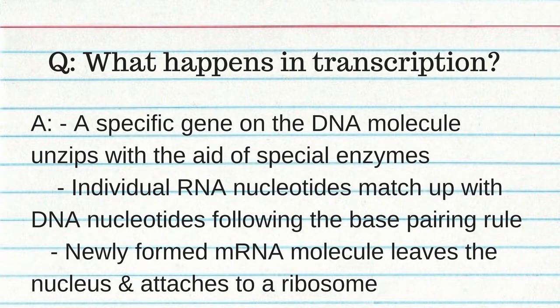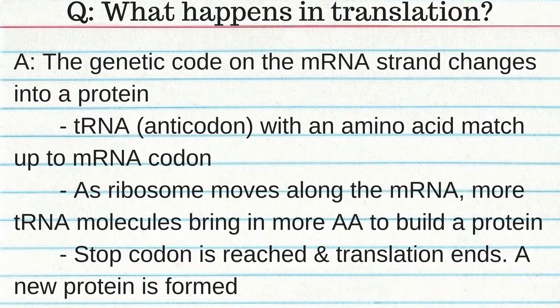What happens in transcription? A specific gene in the DNA molecule unzips with the help of special enzymes. Individual RNA nucleotides match up to the DNA nucleotides following the base pairing rule. The newly formed mRNA molecule leaves the nucleus and attaches to the ribosome. An mRNA codon is a group of three nucleotides on mRNA. In translation, the genetic code on the mRNA strand is changed into a protein: tRNA anticodons with amino acids match up to mRNA codons; as ribosomes move up the mRNA, more tRNA molecules bring in more amino acids; a stop codon is reached, translation ends, and a new protein is formed.